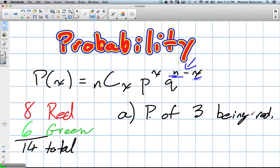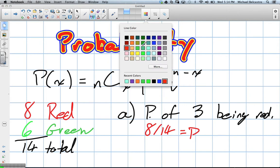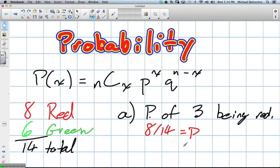Probability of three being red. In other words, we have to find the probability of choosing a red candy. Well, if there is eight out of 14 total, that is our P value, which then makes our Q value, in this case essentially choosing a green, six out of 14. Our probabilities have to add up to 100%.